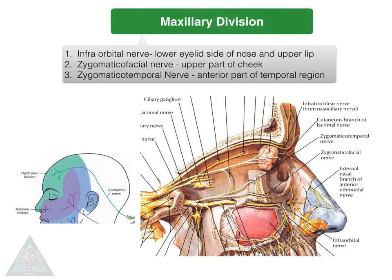Coming to the maxillary division, the branches are the infraorbital nerve supplying the lower eyelid, side of the nose, and upper lip; the zygomaticofacial nerve, which supplies the upper part of the cheek; and the zygomaticotemporal nerve, which supplies the anterior part of the temporal region.